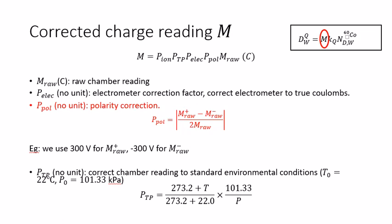The second factor is P-polarity, the polarity correction. Basically it corrects the subtle difference between biasing the chamber to the equal amount of positive and negative volts. This factor comes from our chamber measurement.